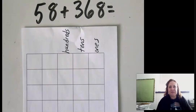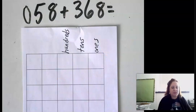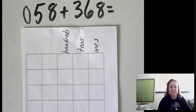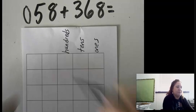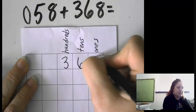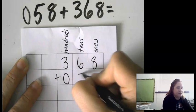So this one is 58 plus 368. First step is going to be to stack them on top of each other, making sure we have our place values lined up correctly. So one way I can do that is I can add a 0 in front of this 58 to make sure I have 3 digits and 3 digits that I'm adding up. And remember, I want to put the larger number on top. So 368 plus 58.